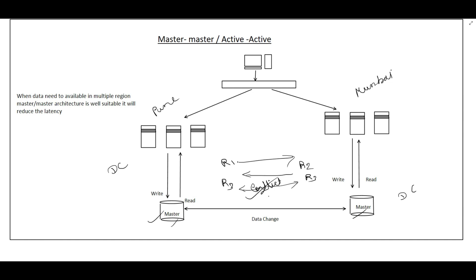In active-active / master-master architecture, both database centers in different geographic locations have a master database and both serve read and write requests. Any change at one site is replicated to the other site. Latency is decreased because both databases have read-write capability across multiple regions.